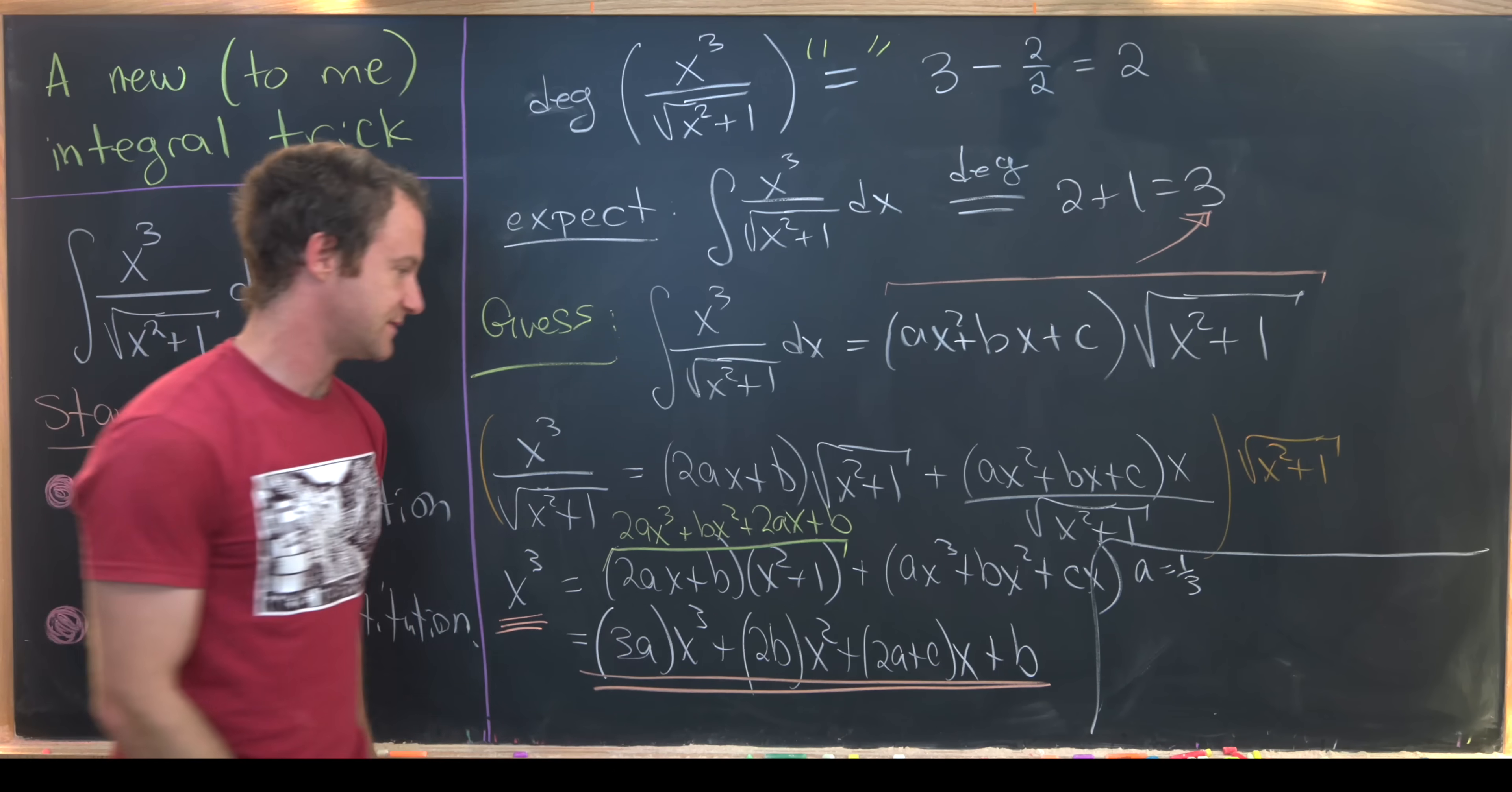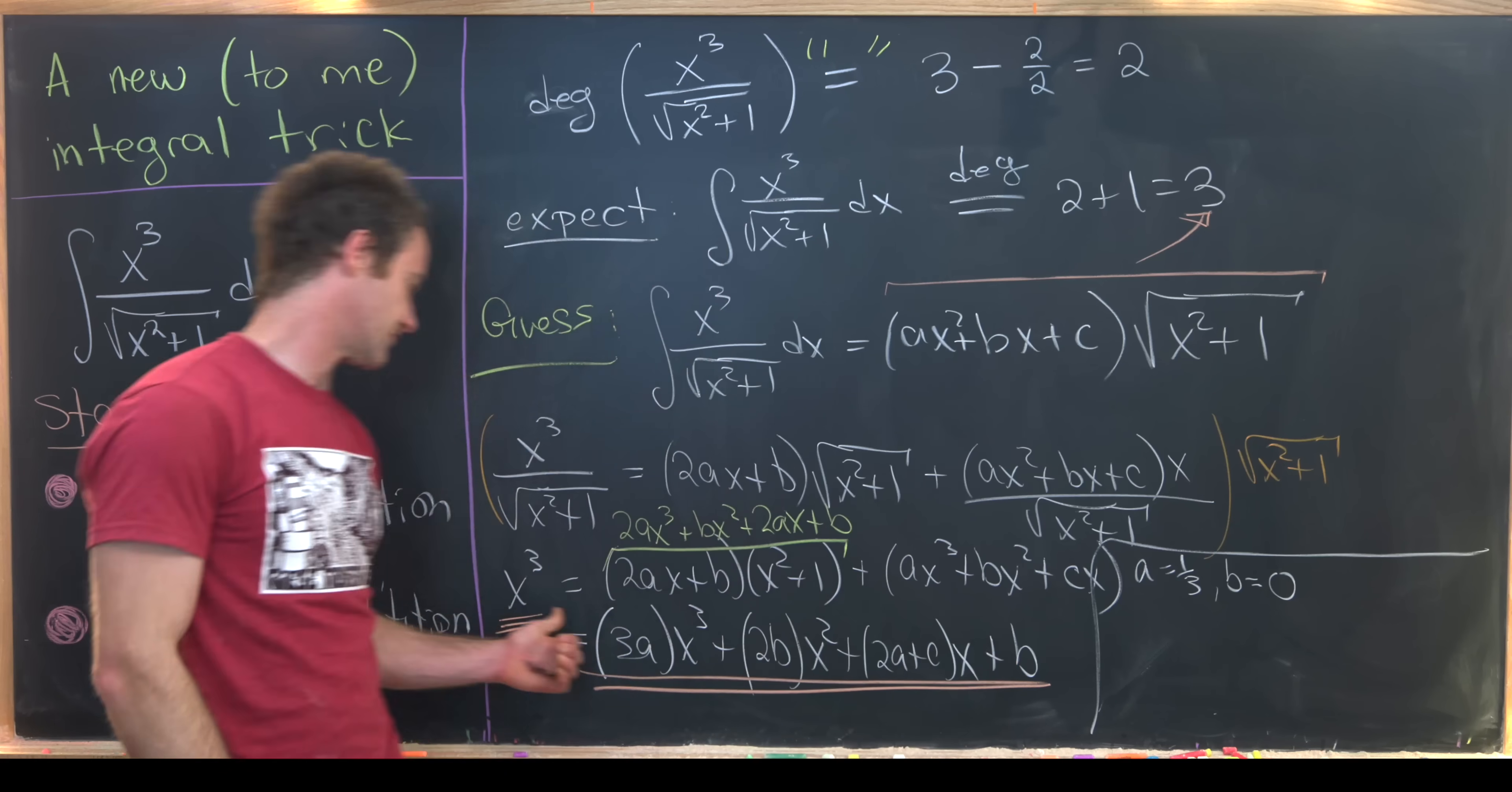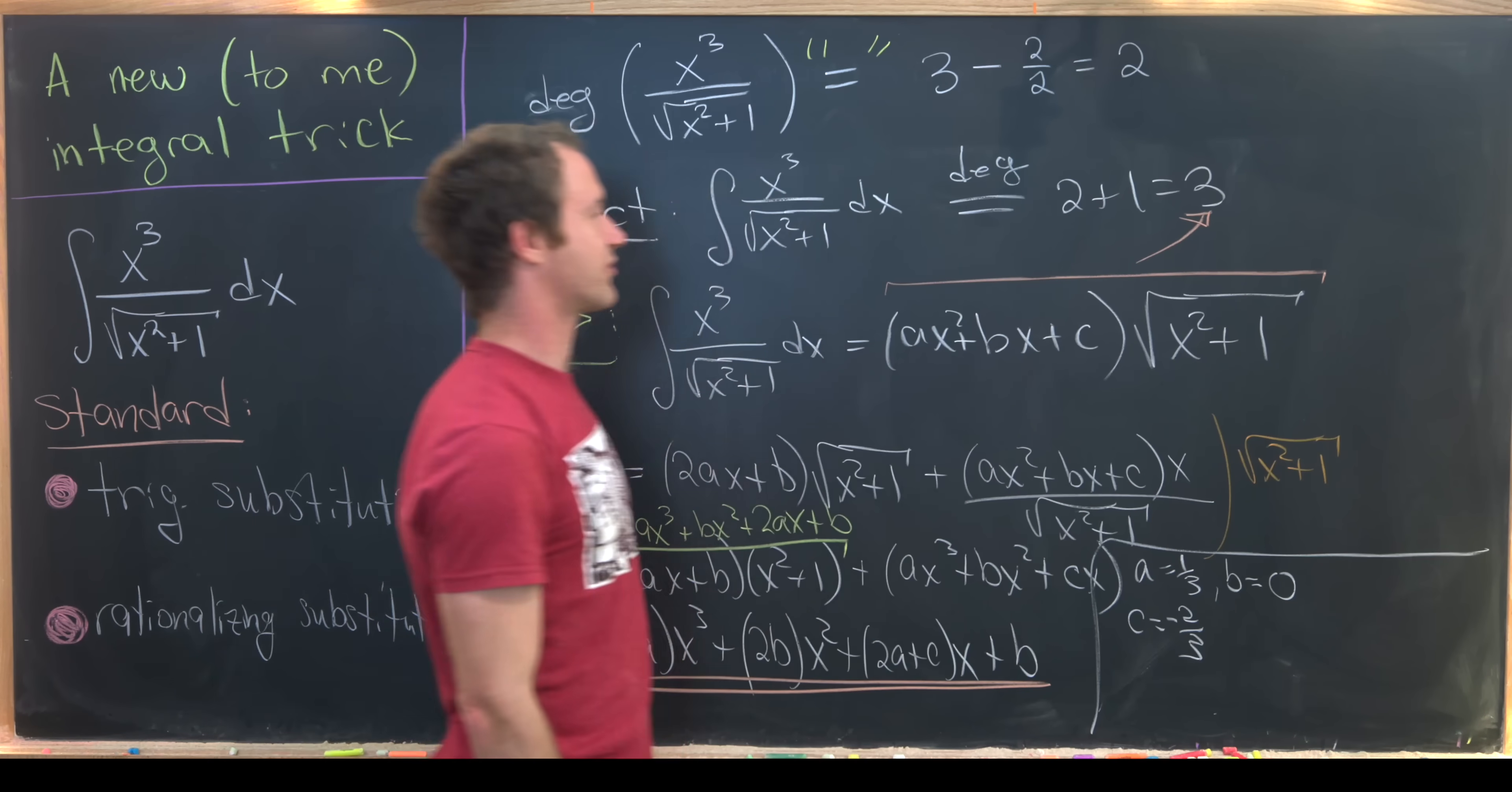And then the b has to be equal to 0. That's because there's no x squared over on this side of the equation. And no constant term on this side of the equation. And then our c must be negative 2 times a. So in other words our c is equal to negative 2 thirds.